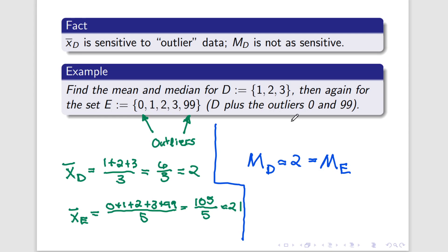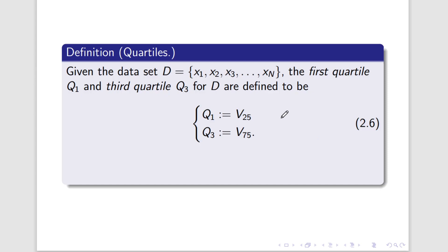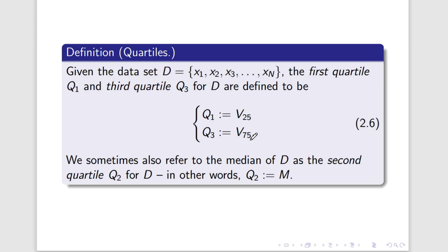There is a way to overcome this, and the way to overcome this is, unfortunately, to add in more data. So we're going to need some more definitions. Given a data set D ordered from least to greatest, the first quartile Q1 and the third quartile Q3 for D are the 25th and the 75th percentiles. The 25th percentile is called the first quartile and the 75th is called the third quartile. Whenever we talk about quartiles, we frequently think of a second quartile Q2, and Q2 is going to be exactly the same thing as the median. In other words, when we have data set D, Q2 and M are exactly the same.